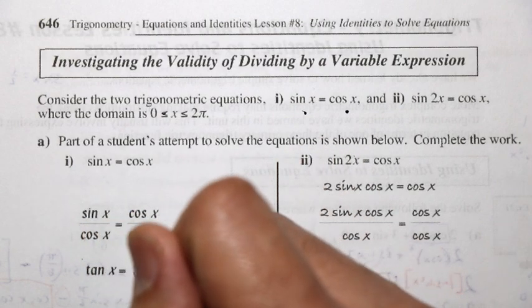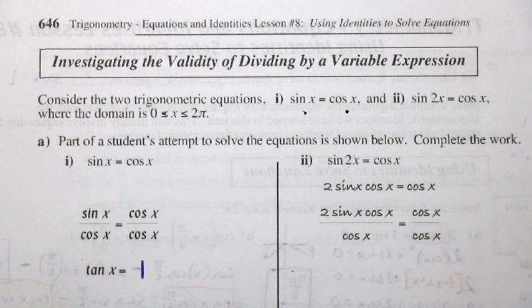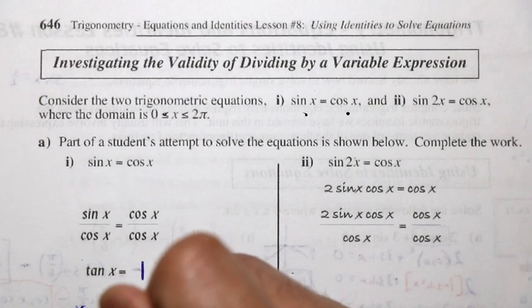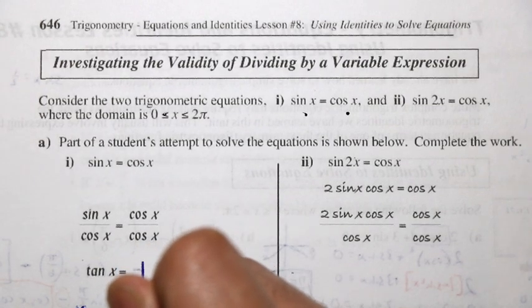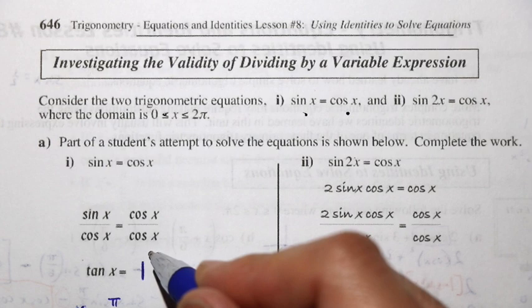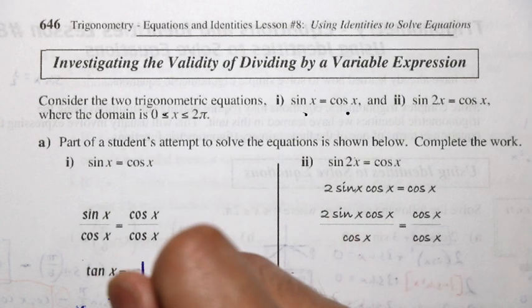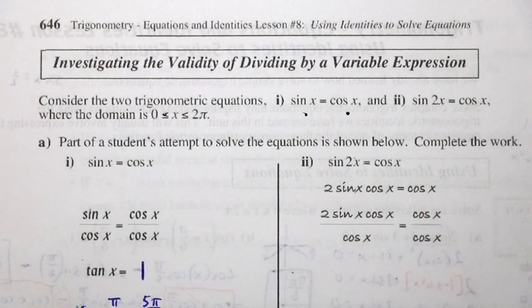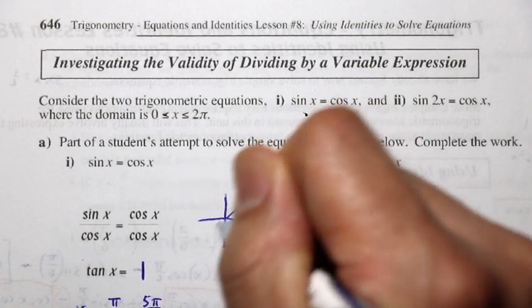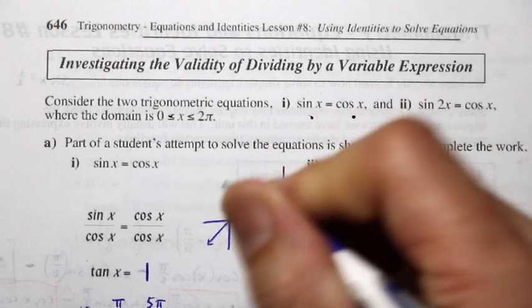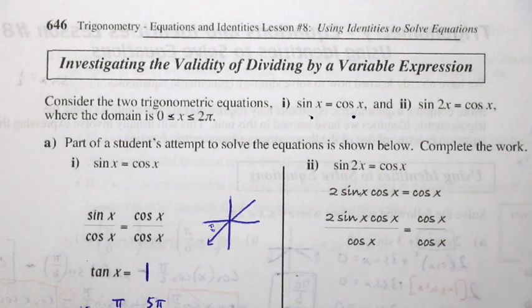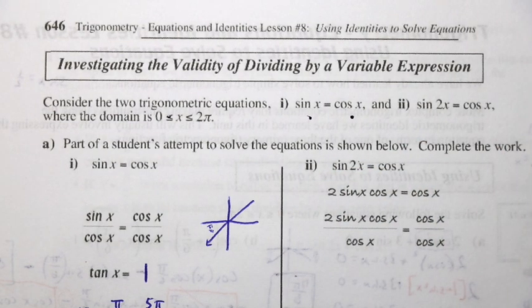For equation 1, sin x = cos x: dividing both sides by cos x gives tan x = 1. So x = π/4 or 5π/4, since tangent is positive in the first and third quadrants.